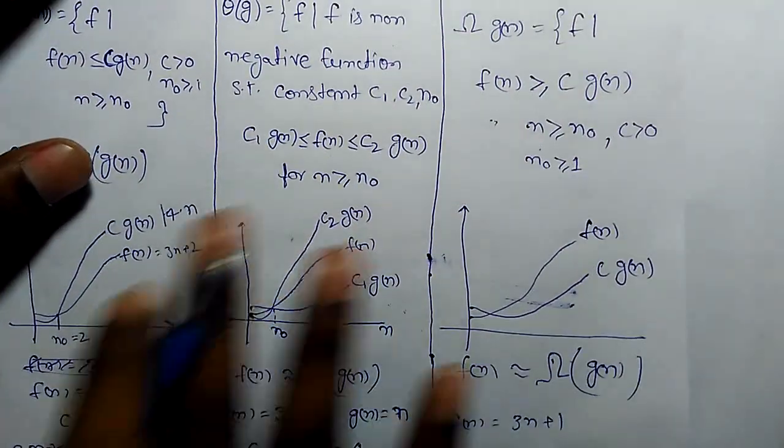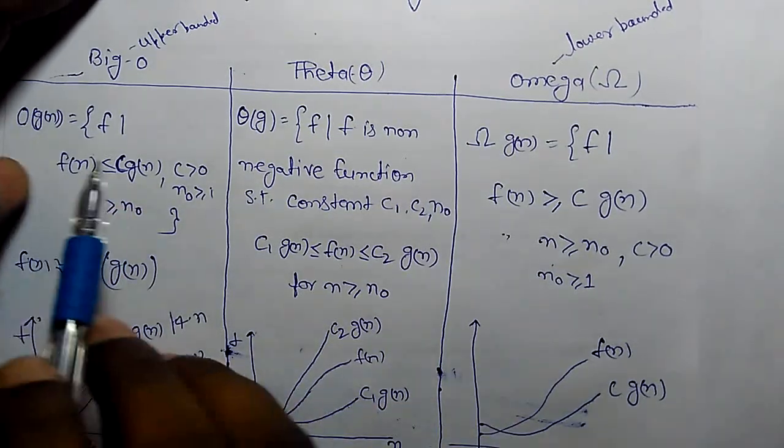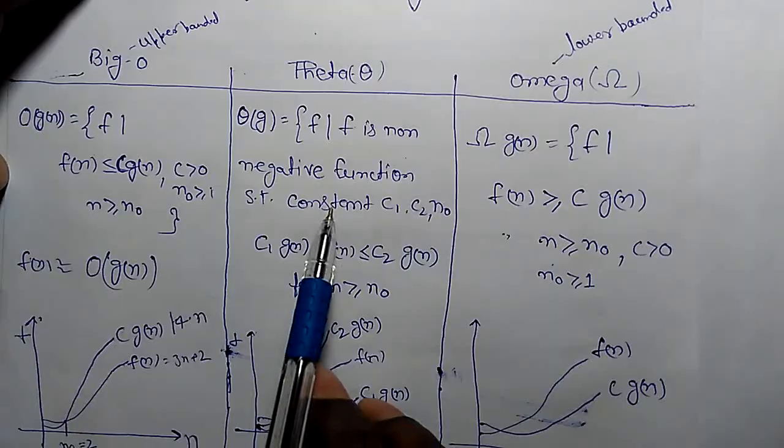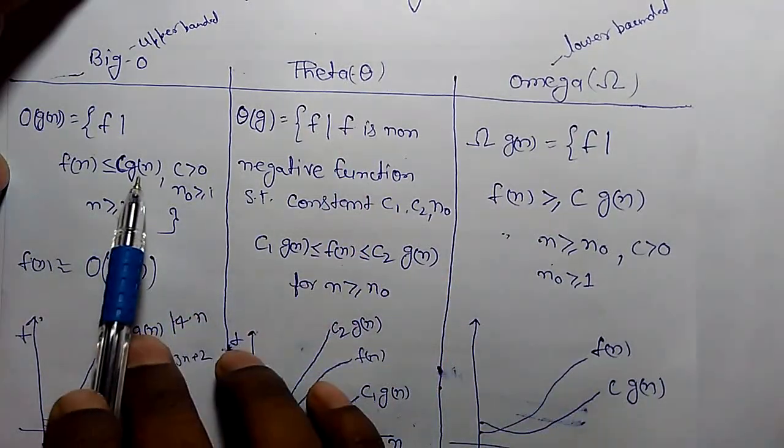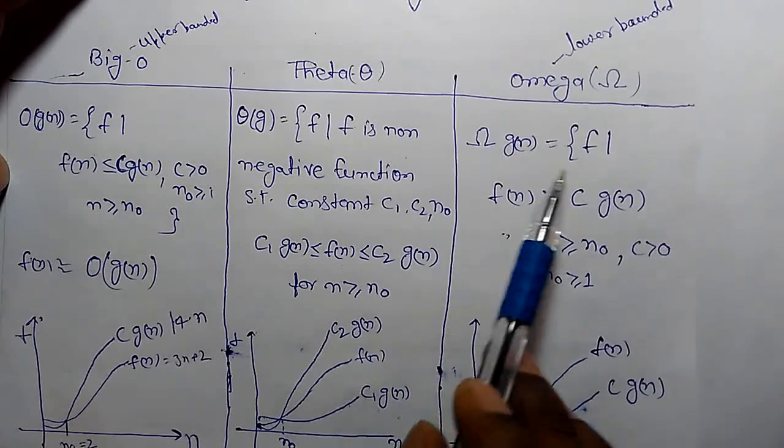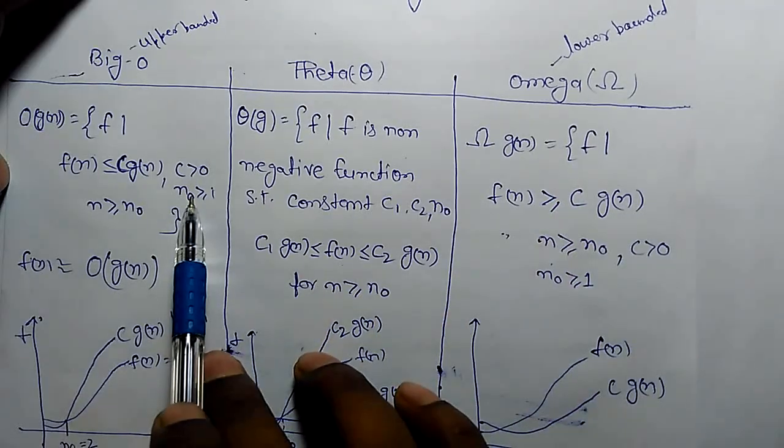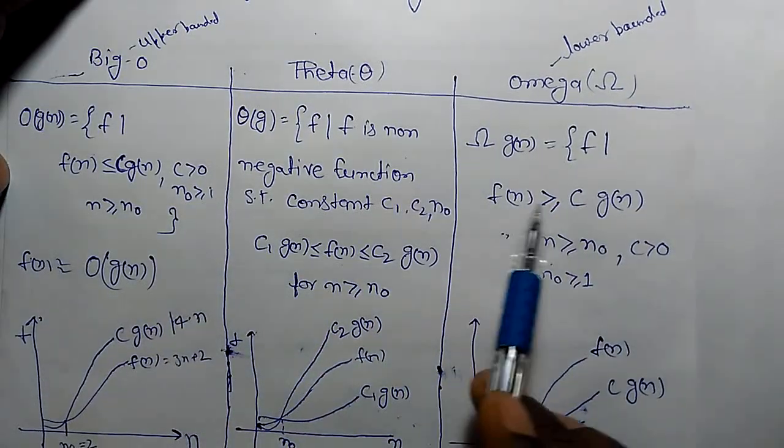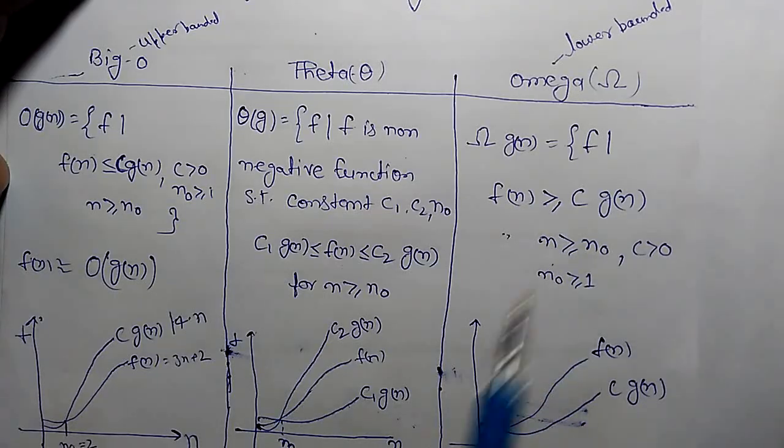F of N and Omega notation. Omega notation, that is lower bounded, is just opposite to Big O. If you see, Theta lies between Big O and Omega, and Omega is just opposite to Big O. F of N should be greater than equal to C of G of N, where N is greater than equal to 1.